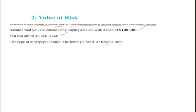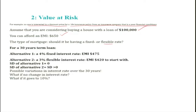You want to buy a house and can afford only $650, but when you take a loan you need to decide on the type of mortgage: should it have a fixed or flexible (adjustable) rate? The answer differs for different people. For a 30-year term loan, one alternative is a fixed interest rate of 4%, giving a monthly EMI of $475, which is within this person's budget of $650. The second alternative is a flexible rate starting at 3%, but this rate may go up or down — when the market interest rate increases, this rate could rise to 4%, 5%, 6%, and so on.